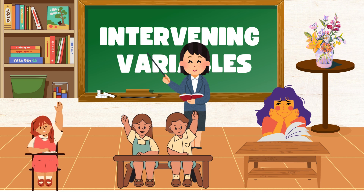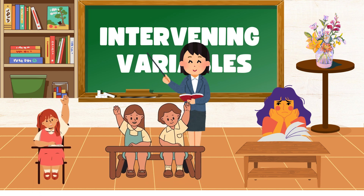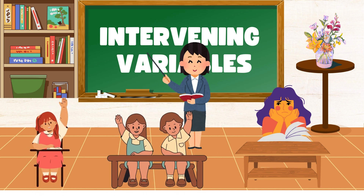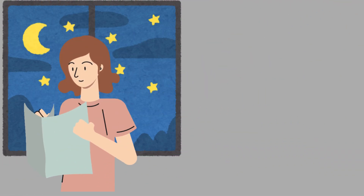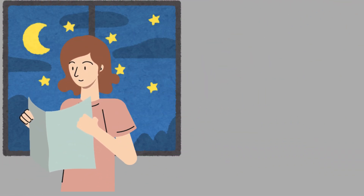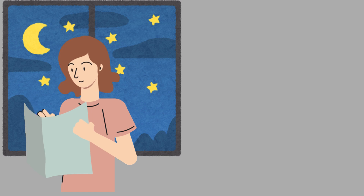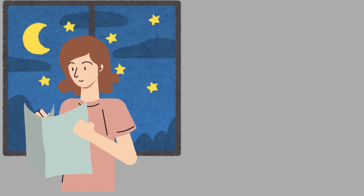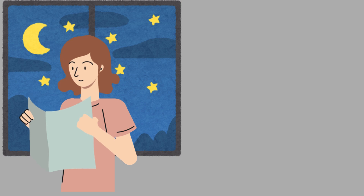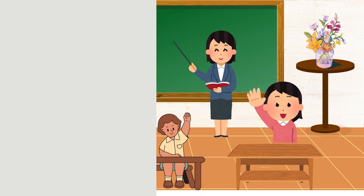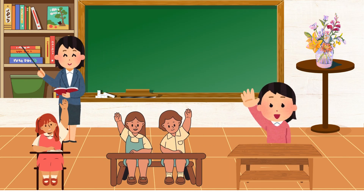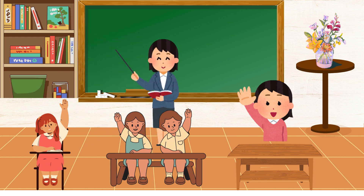For example, a student named Anna is usually quiet in class but suddenly starts answering many questions. The teacher wonders why. The intervening variable could be confidence — she studied hard the night before and feels ready to speak up. The teacher only sees the behavior, but the real reason lies in these unseen mental factors.